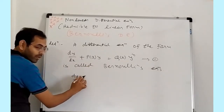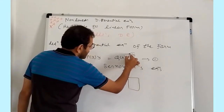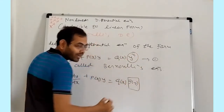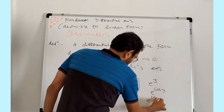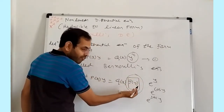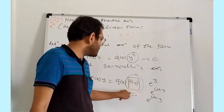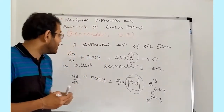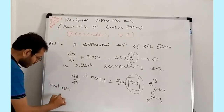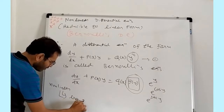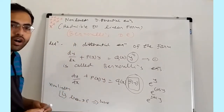More generally, in the form dy/dx plus P(x)·y equal to Q(x), if any function of y — such as e raised to y, e raised to cos(y), or e raised to sec(y) — is multiplied with Q(x), then the given differential equation is called a Non-linear Differential Equation. To solve it, we first convert the Non-linear Differential Equation to a Linear Differential Equation, then find the solution.